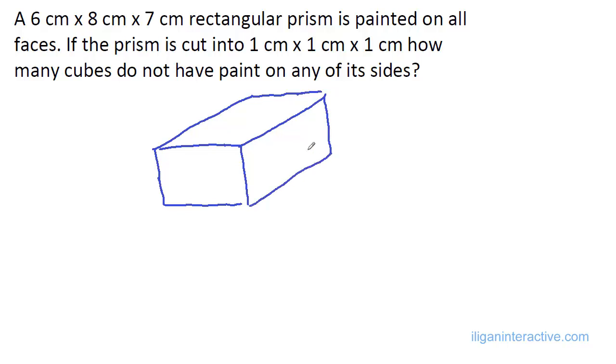Now, you are supposed to paint all of the sides—the top, the bottom, the sides. There are 6 faces. You paint all of that with colors. And then you are supposed to cut this into cubes. How many cubes do not have paint on any of its sides?